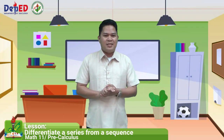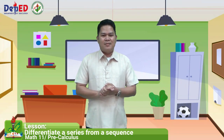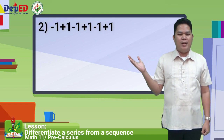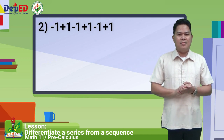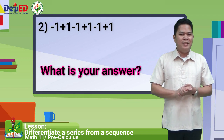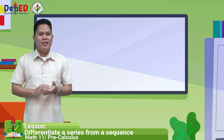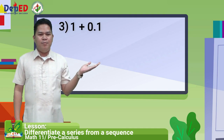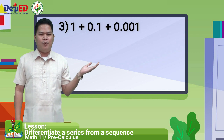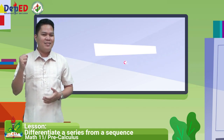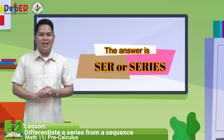Now you will answer the remaining tasks. Number two: negative one plus one minus one plus one minus one plus one. The answer is SER or series. Number three: one plus zero point one plus zero point zero zero one plus zero point zero zero zero one. The answer is SER or series.